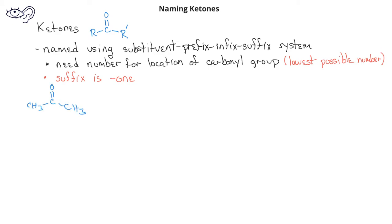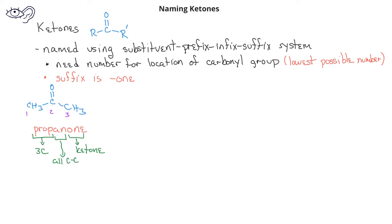In this first example, we have a three-carbon ketone with the carbonyl group in the middle of the three-carbon chain. We would name this propanone, and in this case we do not need a number because the only location in the middle of the chain for the carbonyl group is on the second carbon. A common name for propanone would be acetone.